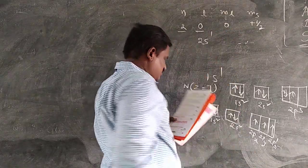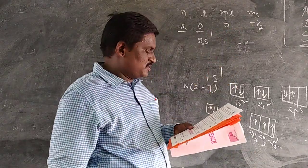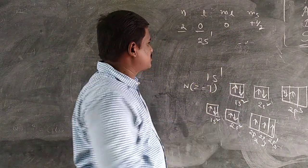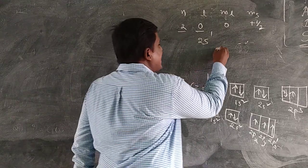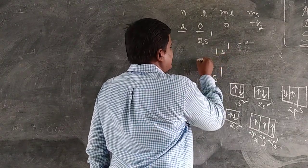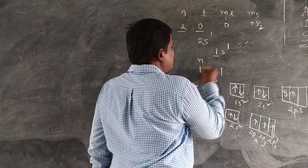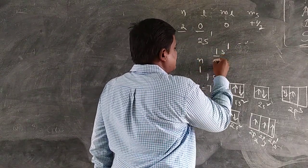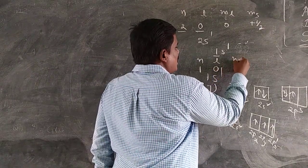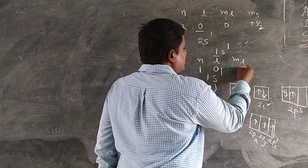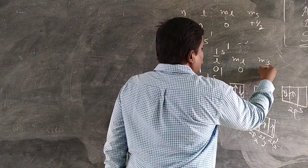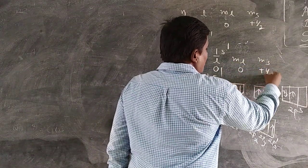Write the four quantum numbers for the 1S1 electron. N value is 1, S means L is 0, ML value is automatically 0, and MS value is plus one-half.